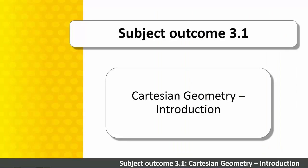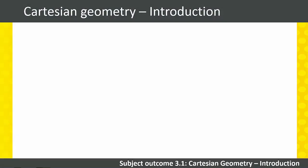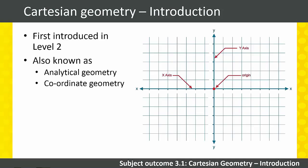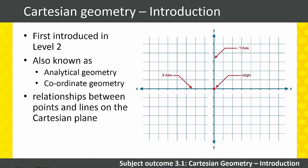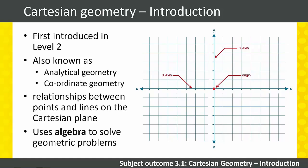Subject Outcome 3.1: Cartesian Geometry — Introduction. Let's watch a video introducing this section. Hi, I'm Ivan Mapaling. Let me introduce analytical geometry. Your students have been working with Cartesian geometry since Level 2. Cartesian geometry is often called analytic geometry or coordinate geometry. Remember that with coordinate geometry we are exploring the relationships between points and lines on the Cartesian plane. This allows us to use algebra to solve geometric problems.